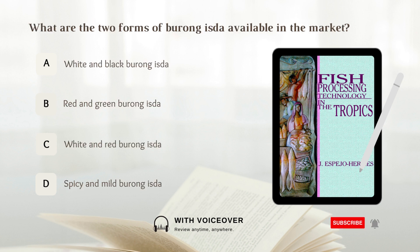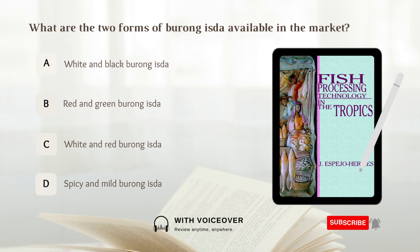What are the two forms of burong isda available in the market? A) White and black. B) Red and green. C) White and red. D) Spicy and mild.